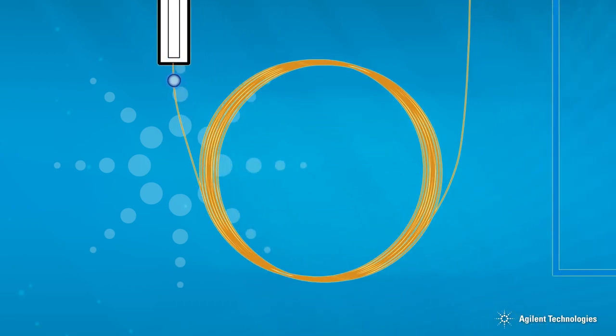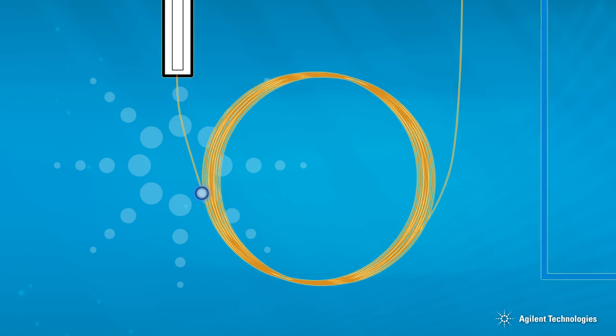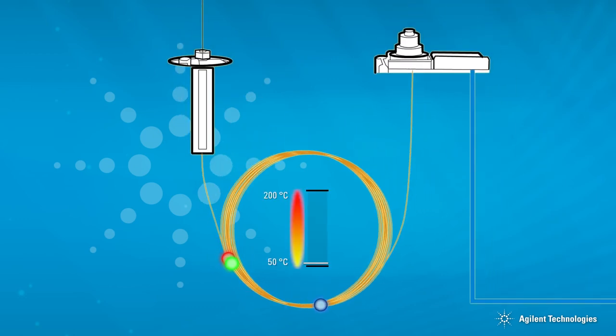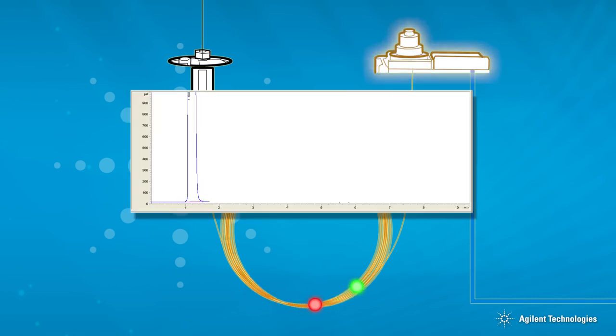The sample moves in a tight band into the GC column which is initially held at a low temperature. The lighter, lower boiling point solvent moves away from the sample components that are being analyzed towards the detector. The first peak in a GC analysis is usually the solvent peak. It will be very large and often saturate the response of the detector.